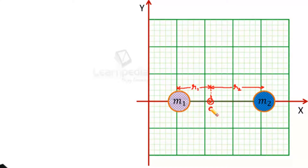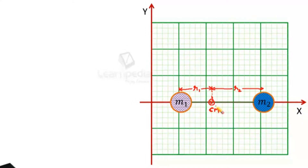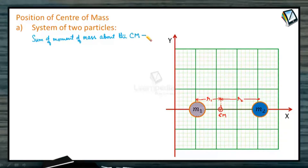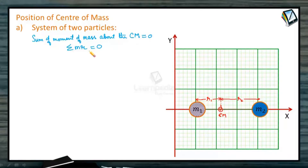Let me call this point C — the center of mass point. About this CM point, the sum of moment of mass, that is mass times distance, about the center of mass is equal to zero. From now on I will represent this as CM. So the center of mass is located such that the summation of M into R equals zero.